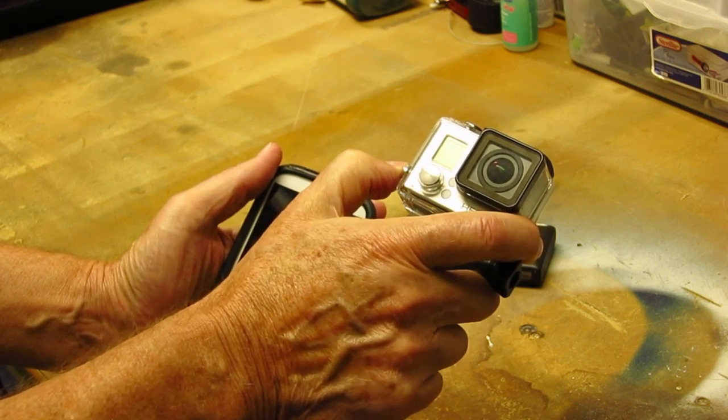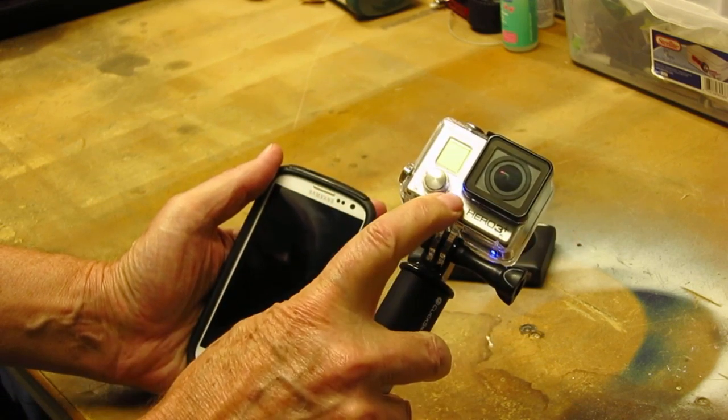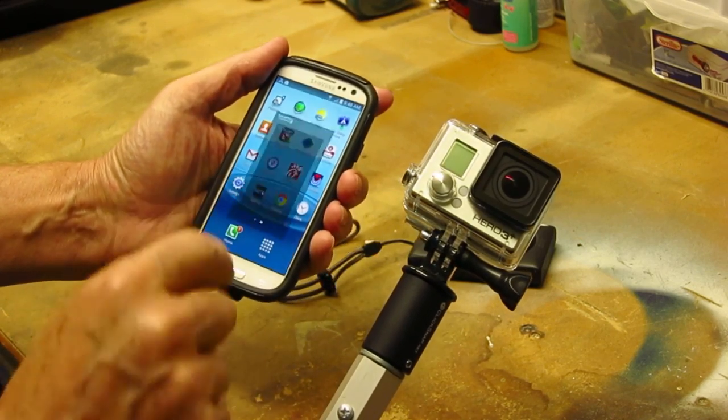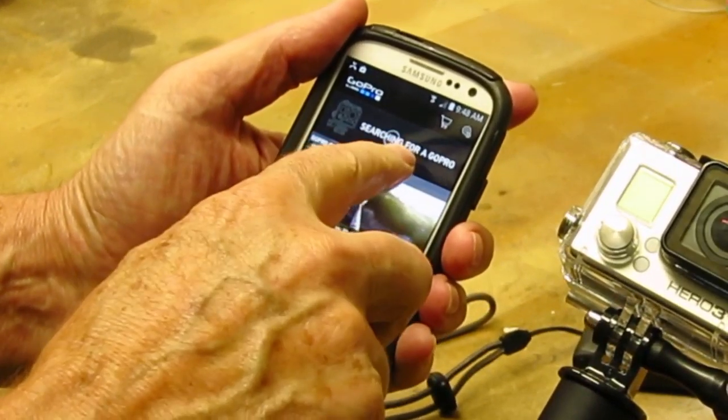On the GoPro, if you hold the button on the side, Wi-Fi comes on—that's what that blue light means. With the Wi-Fi on, you start your phone and you start the GoPro app on the phone.